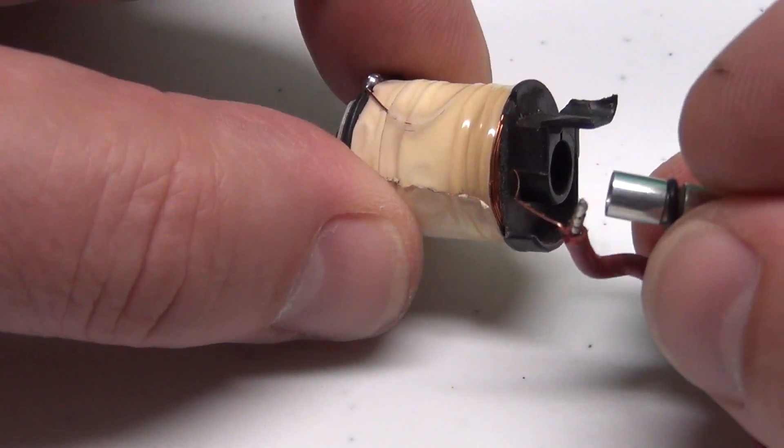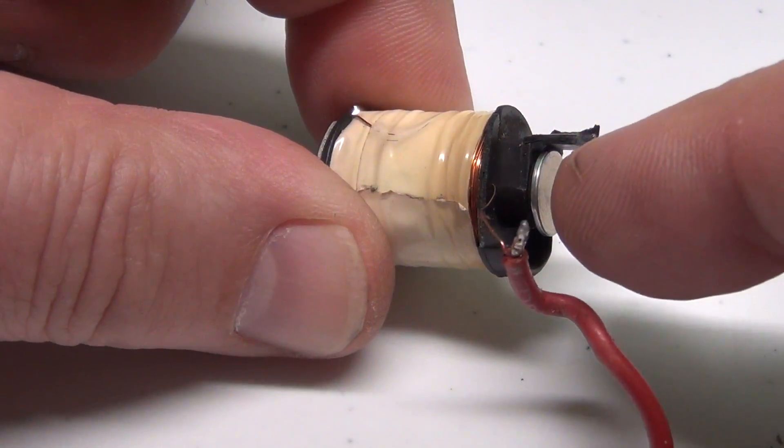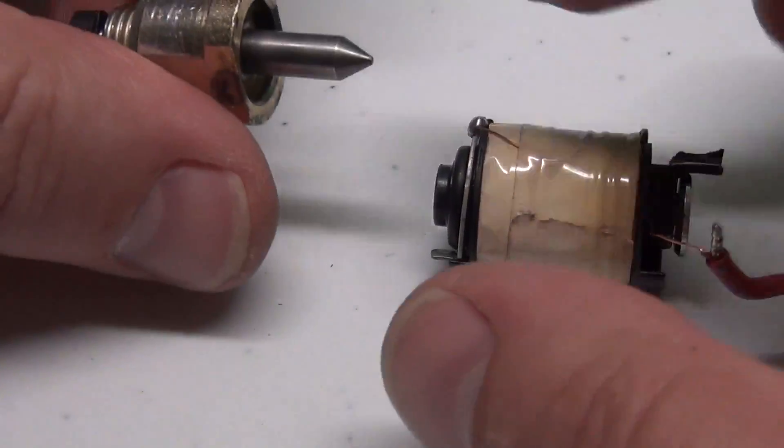then this little piece here, that is located there, will become magnetic. So the moment it is magnetic, it will pull on this piece.